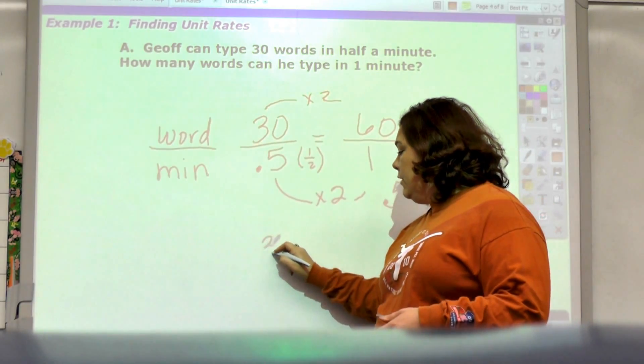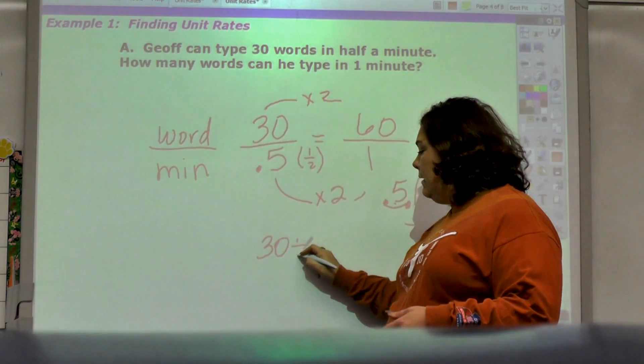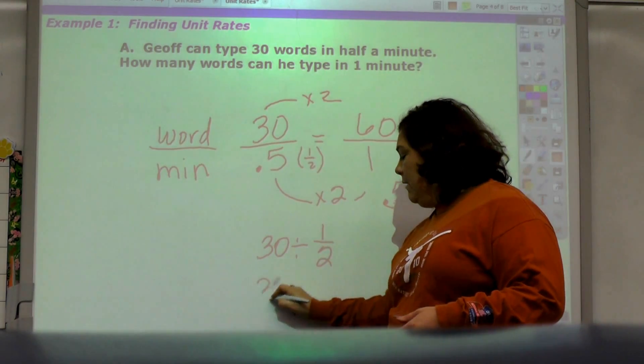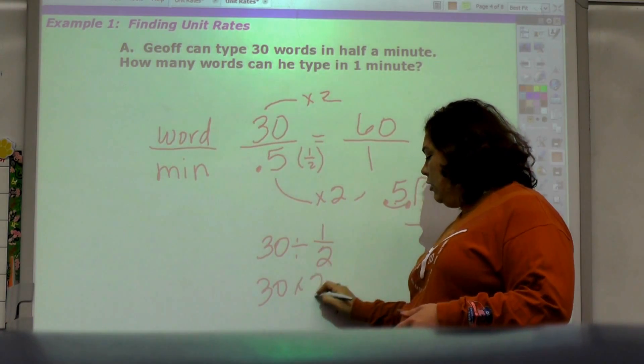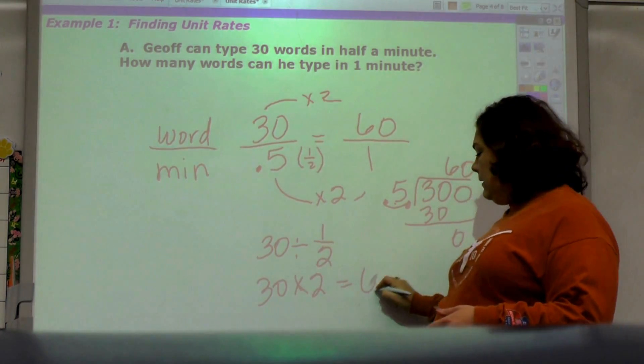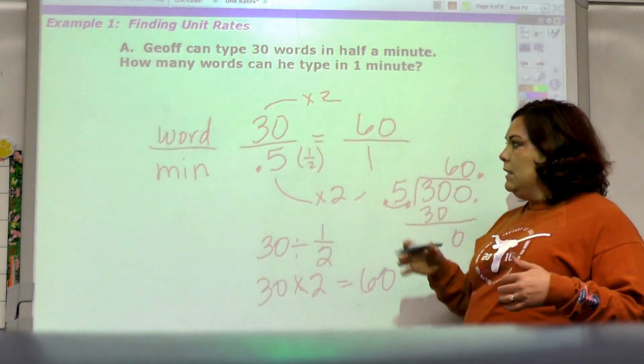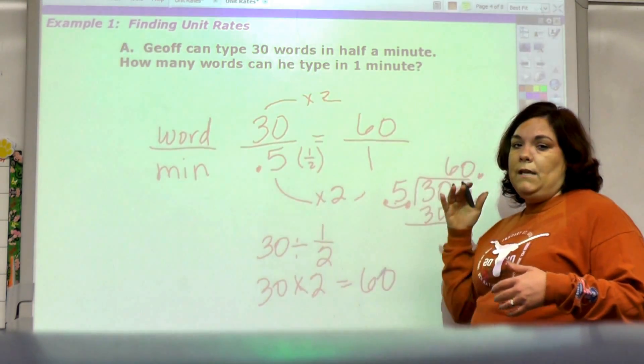If I didn't know that a half was 0.5, I could do 30 divided by one half, and of course that would be 30 times 2 which is 60. So what I hope you're seeing is that there are multiple ways to solve these. You need to pick the one that works for you.